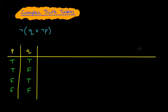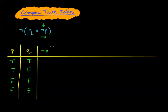We need to slowly build up so that the final statement is our last column. Looking at the structure: we have the 'not' outside, then a bracket, then the 'or'. Remember, like BIDMAS, we do brackets first. But inside the bracket there's 'not P', so I'll work out 'not P' first.